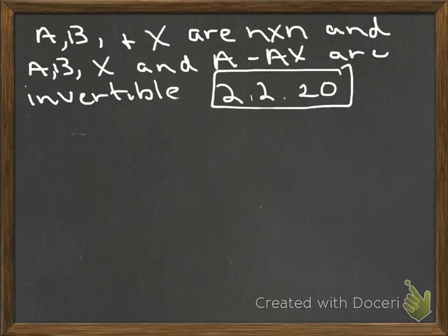You're given that A, B, and X are n by n, and that A, B, X, and A minus AX are invertible matrices. So you're asked to solve for X, and the expression that you start with is (A - AX)^(-1) = X^(-1)B.